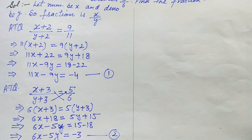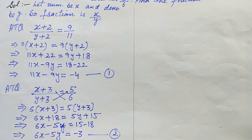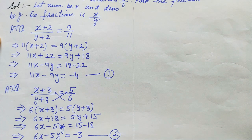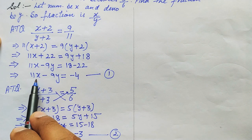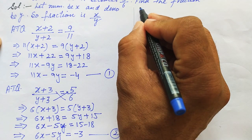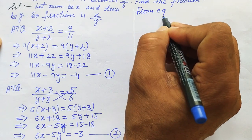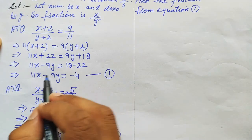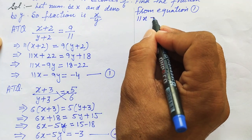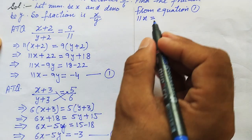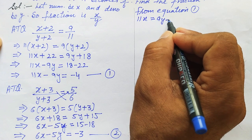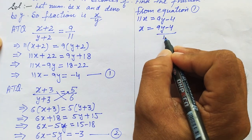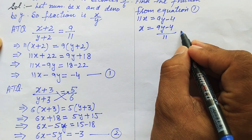We'll solve these two linear equations using the substitution method. From equation 1, we find the value of x in terms of y. From equation 1: 11x = 9y − 4, so x = (9y − 4) over 11. Let this be equation 3.